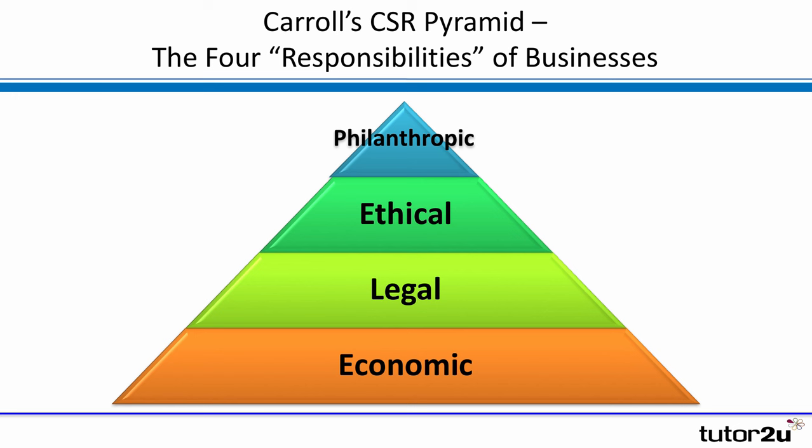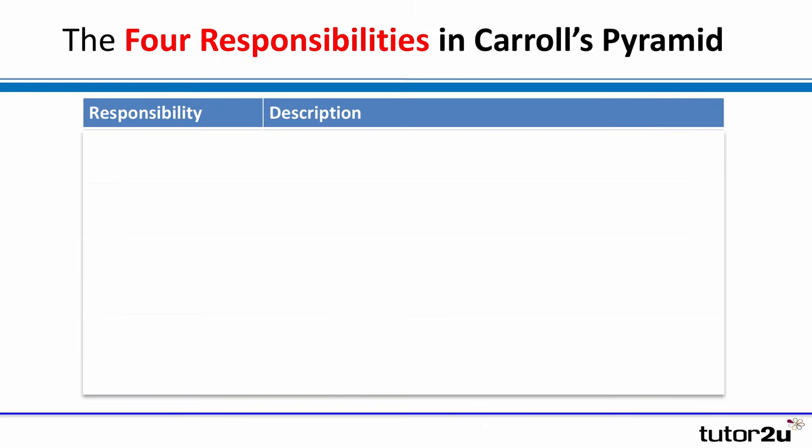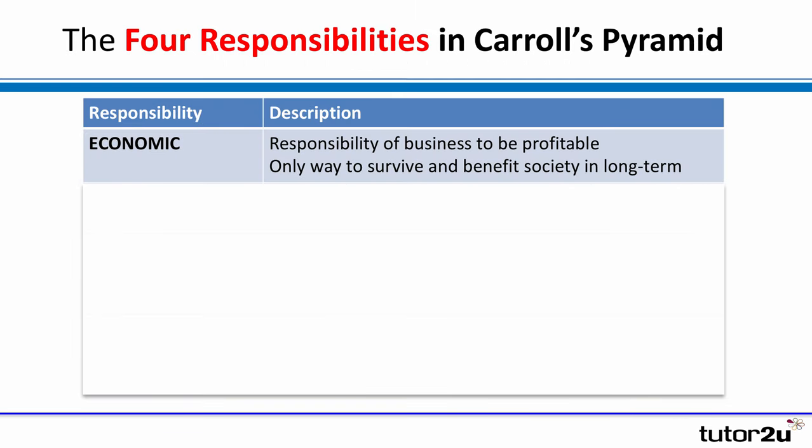The starting point is the foundation of CSR, which Carroll argued was the economic. What he was really saying here is that before a business can start to do the other clever stuff like philanthropic activities, it first must make a profit. A business is only useful to society if it's profitable, if it's able to survive, generate profits, pay wages and so forth.